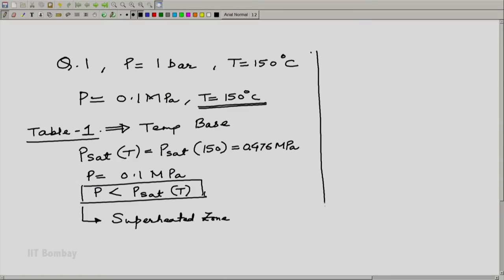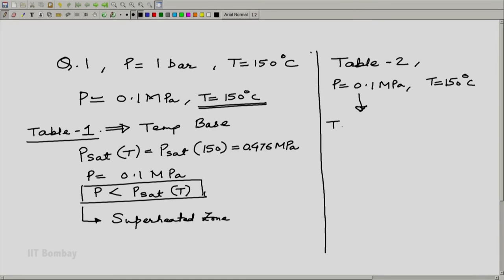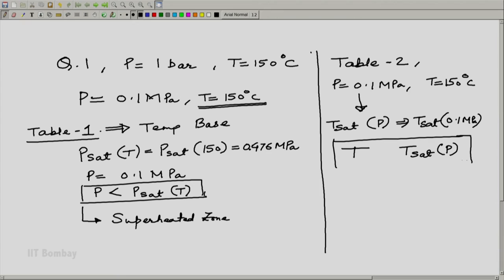This is very simple using Table 1. Let us now do the same exercise using Table 2, and see if we reach the same conclusion. For Table 2, I will use pressure as the base. Our condition is p = 0.1 MPa and T = 150°C. Because pressure is the base, let us get t_sat(p) — that means t_sat at 0.1 MPa — and then compare T with t_sat(p). T = 150°C.